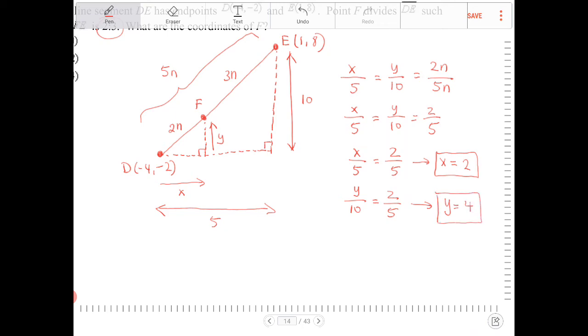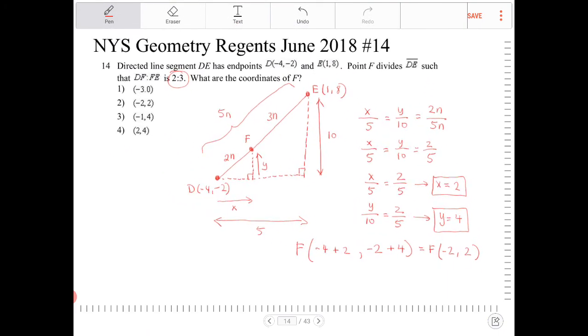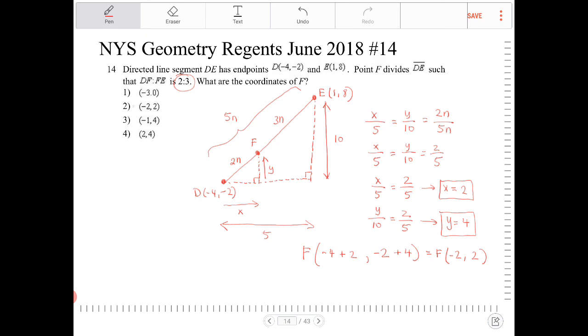So from point D, what's going to happen is from point D, I will need to move 2 units to the right. So it's negative 4 plus 2. And then from point D, I'm going to have to add 4 units up. So negative 2 plus 4. So the coordinate for point F will be negative 2 comma positive 2. So that would be option 2.